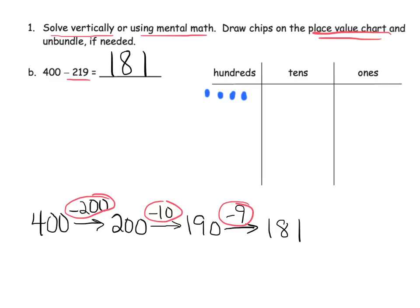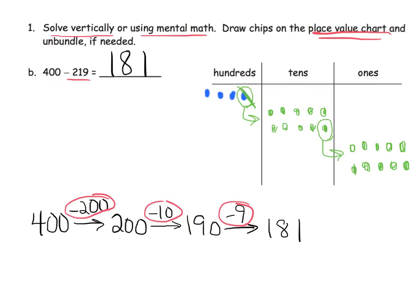We need to subtract nine ones and one ten, but we don't have any ones and we don't have any tens to subtract, so we're going to have to do some unbundling. We'll take one hundred and unbundle it to get ten tens, then take one of those tens and unbundle it for ten ones.